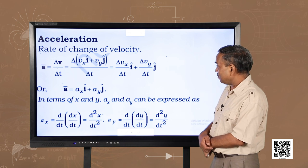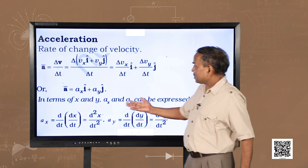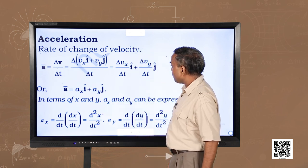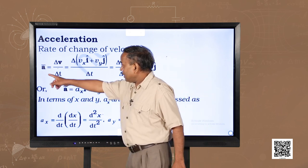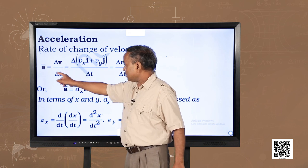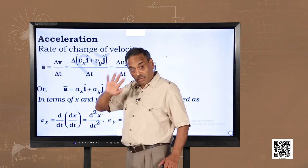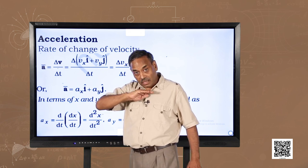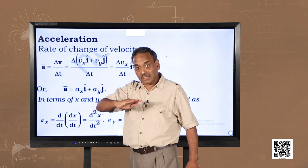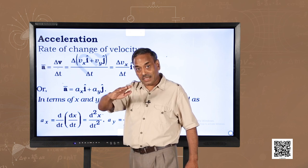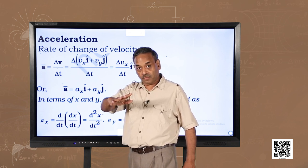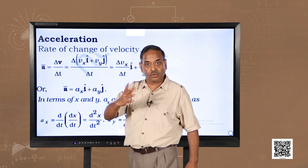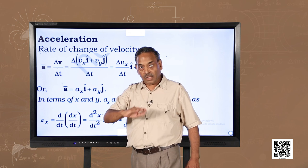We will do it graphically. By definition, we know that acceleration is the rate of change of velocity — vector a is equal to change in velocity divided by delta t. We will be considering throughout this textbook that acceleration is uniform, meaning constant acceleration. That means d a by d t is always zero. Some books say constant, some say uniform — both are the same thing.